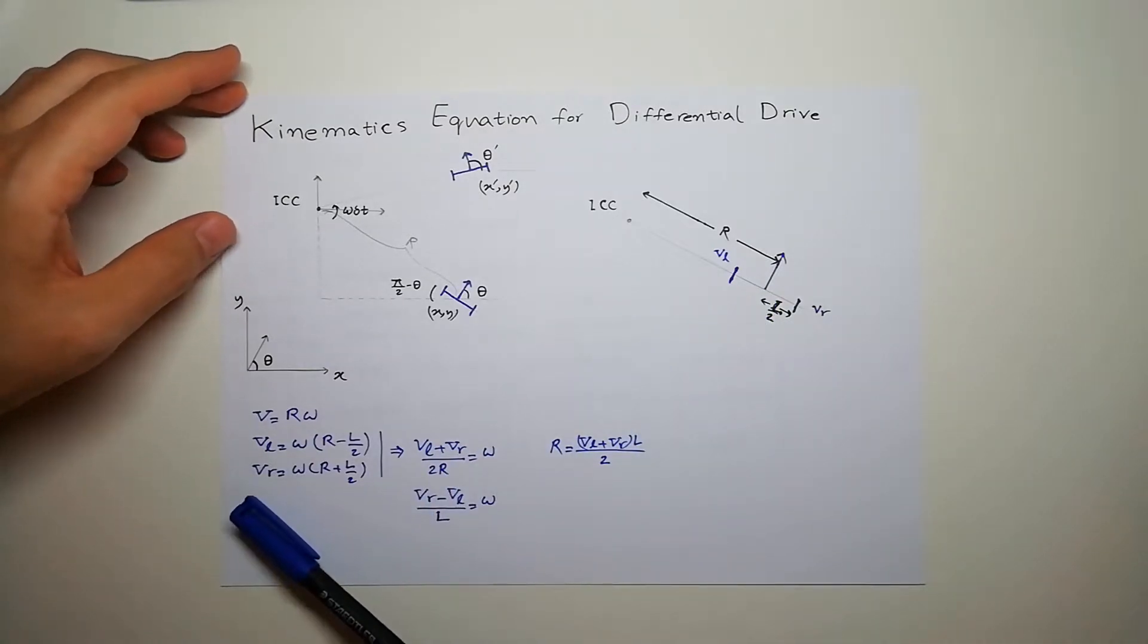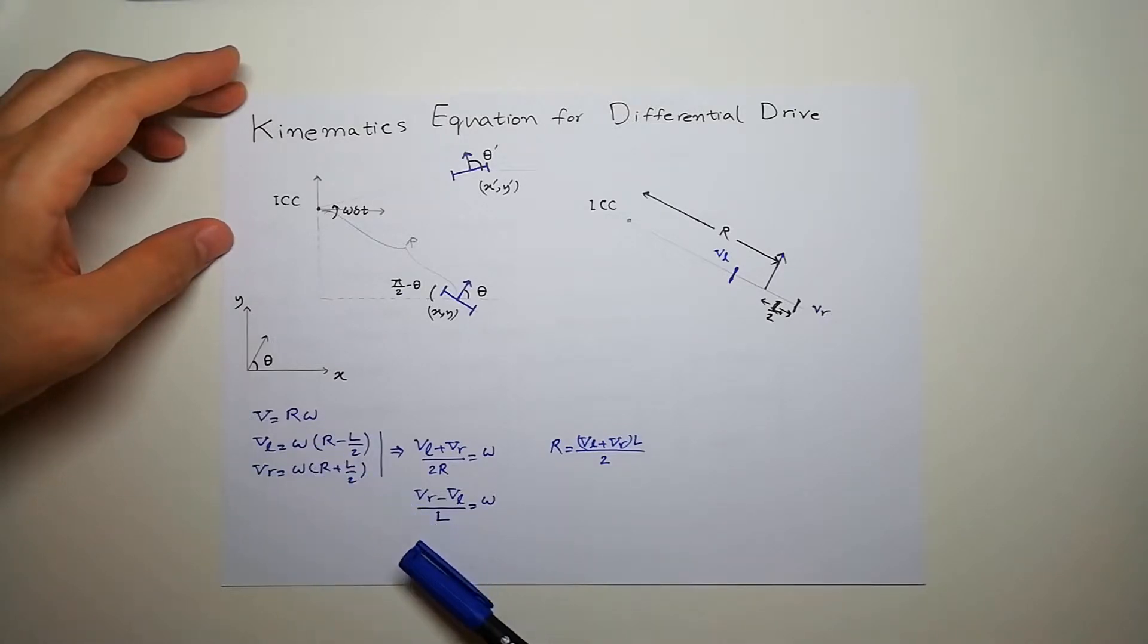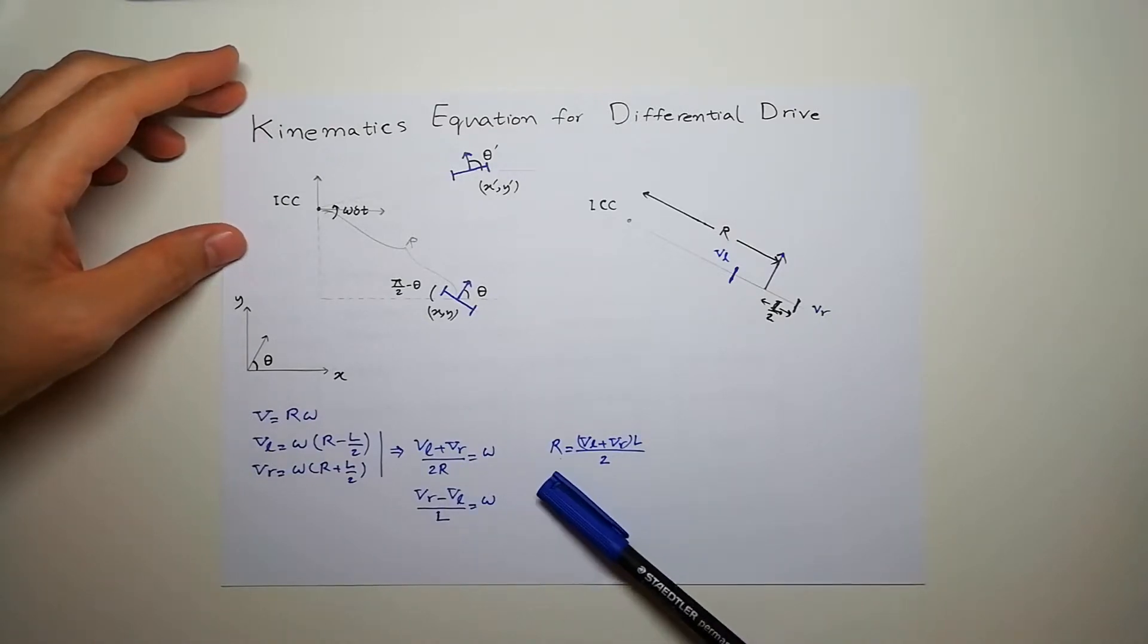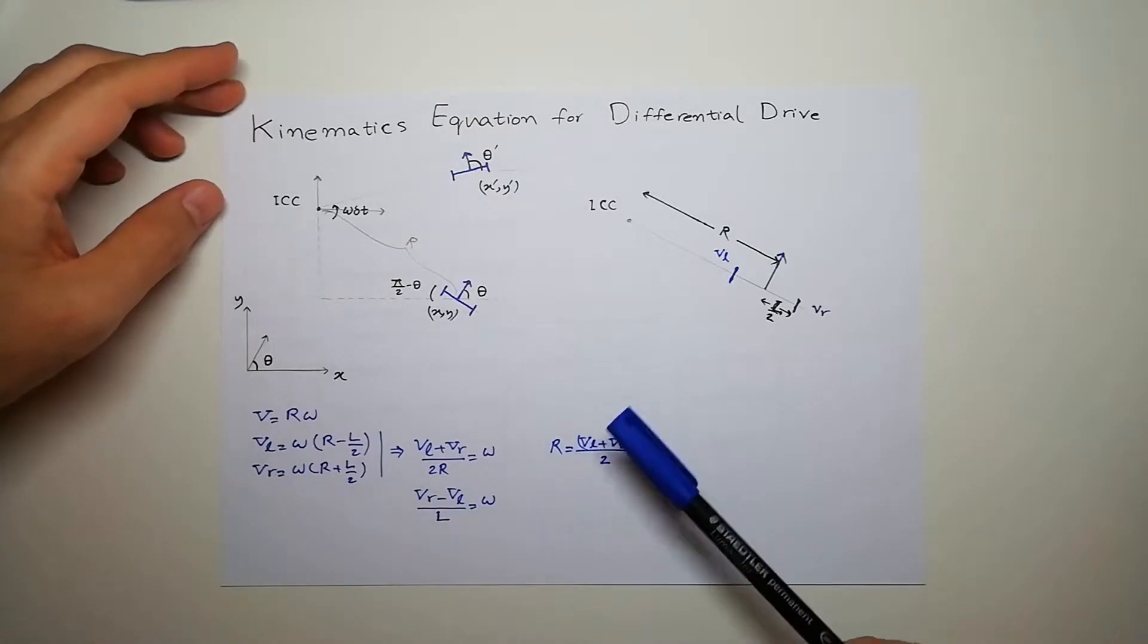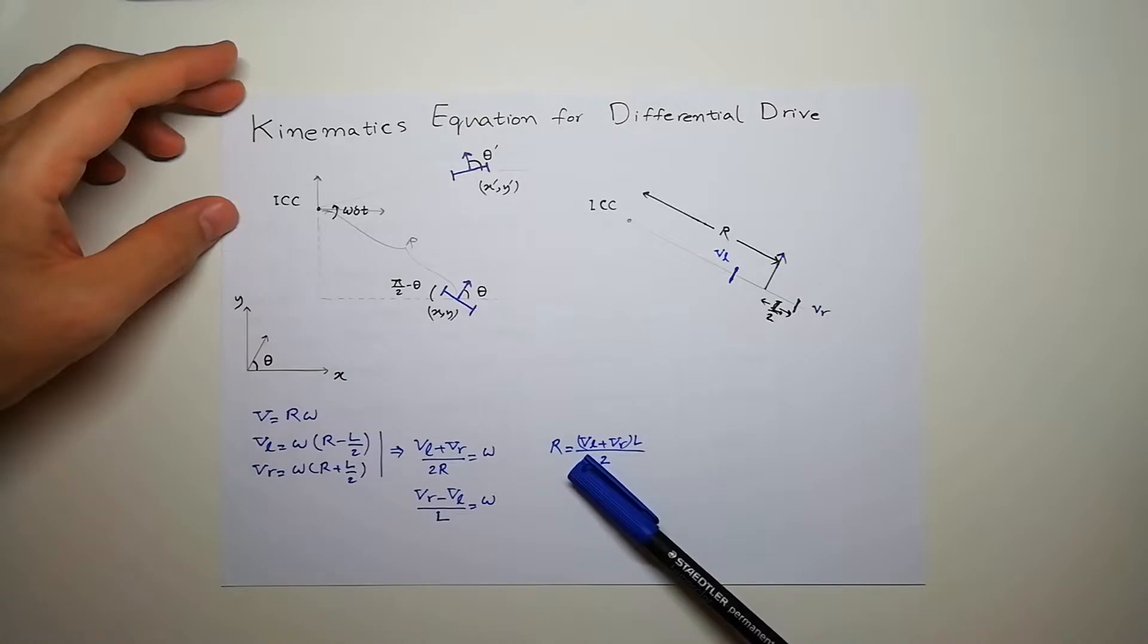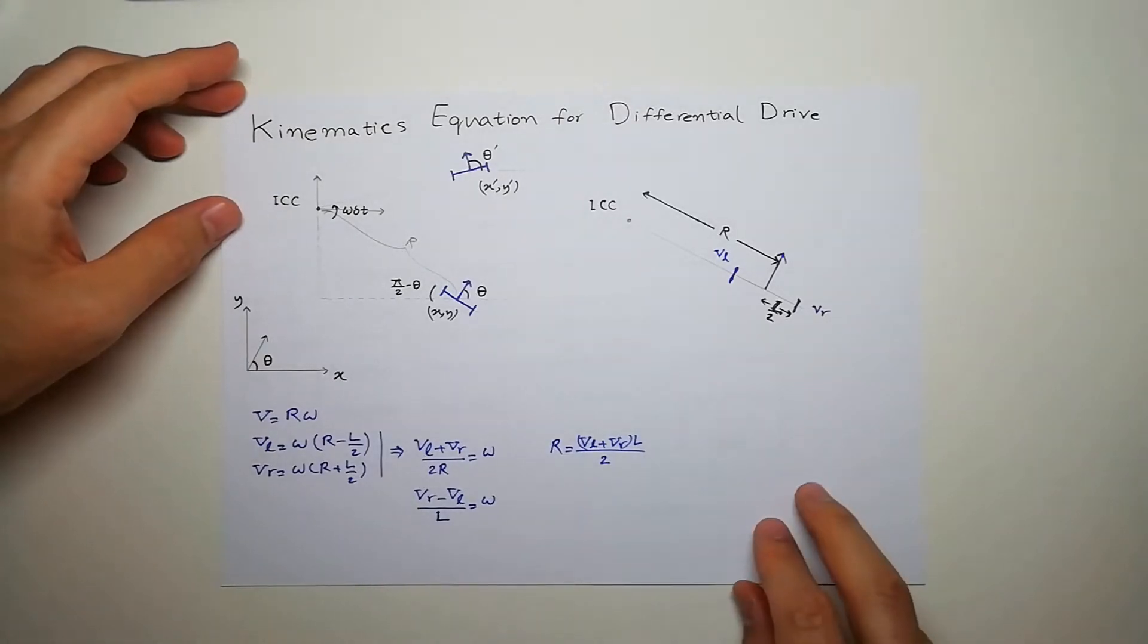If we add and subtract these two equations, we can get these two new equations which get rid of R or L in each one of them. So the radius for this ICC is velocity of the right wheel plus left one multiplied by L which is the size of the robot divided by 2.